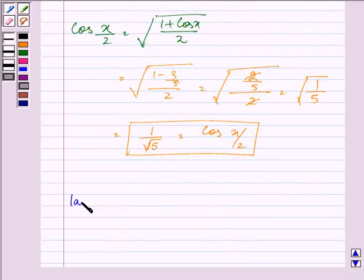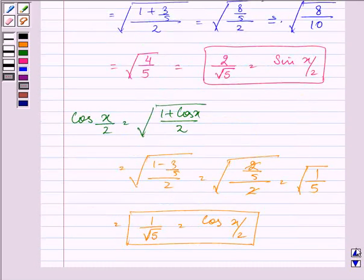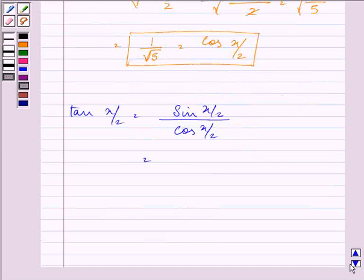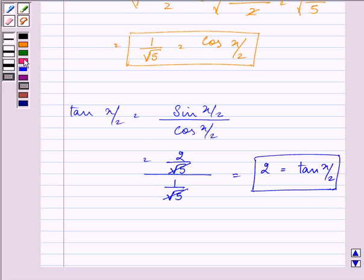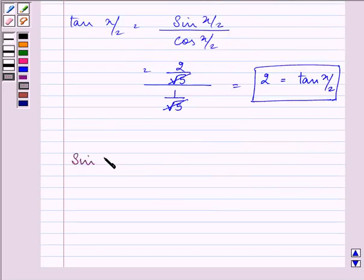We need to find tan x/2. That can be found by sin x/2 divided by cos x/2. Sin x/2 as we have found out earlier is 2 by root 5. So it will be 2 by root 5 divided by 1 by root 5. Root 5 will get cancelled out and the result is 2, and that is equal to tan x/2.